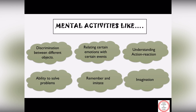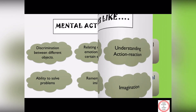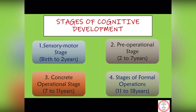Piaget's theory of cognitive development proposes four stages of cognition. The first one is the sensory motor stage, from birth to two years. Second is the pre-operational stage, two to seven years of age. Third is the concrete operational stage, seven to eleven years. And the formal operational stage is from eleven to eighteen years of age.